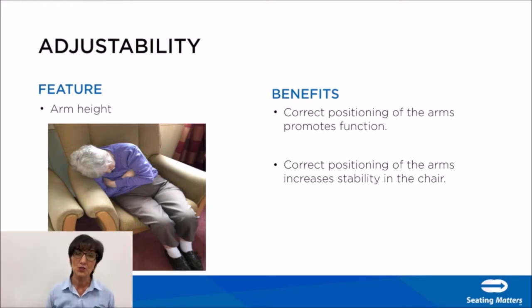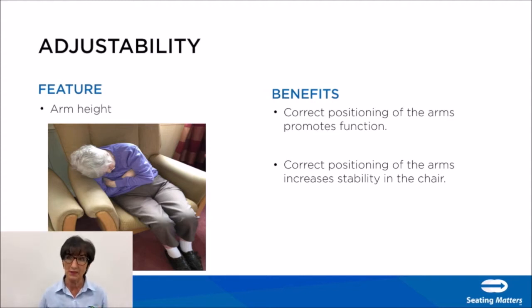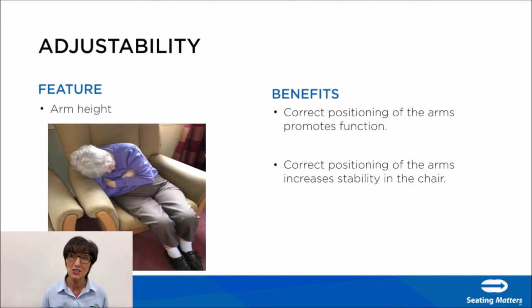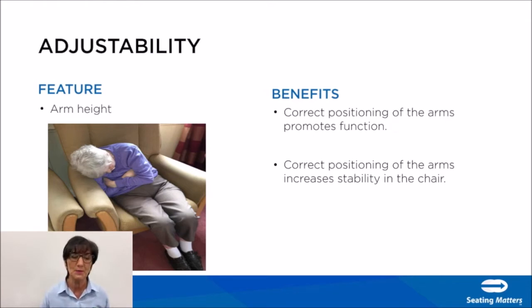Arm height adjustment is the next adjustability feature. While the arms only take around 2% of body weight in normal sitting, correct positioning of the arms is essential to achieve a midline posture and increases stability and function in the chair. If armrests are too far away and too low, the user is unable to use them and ends up in a very non-functional position. So while armrests take only 2% of the weight, they are essential for good midline position, stability, and function.